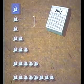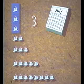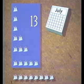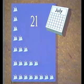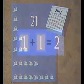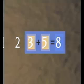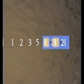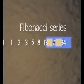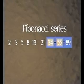The number of rabbit couples increased in a certain sequence each month: 1, 2, 3, 5, 8, 13, 21, and so on. Each number in this series equals the sum of the two previous numbers. 3 plus 5 equals 8, 5 plus 8 equals 13, and so on. These numbers, growing to infinity, are known as the Fibonacci series.